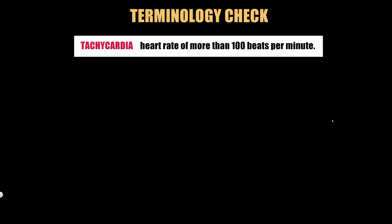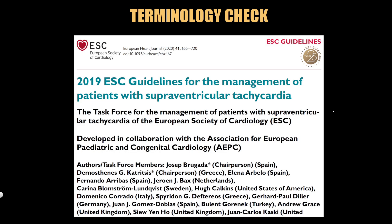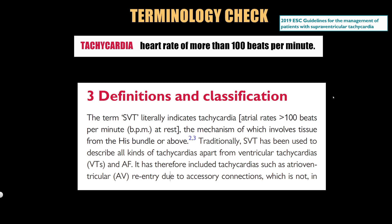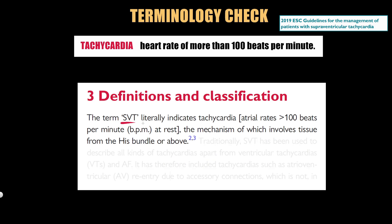Let's start from the terminology check. Tachycardia means a heart rate greater than 100 beats per minute. According to European Cardiology Society guidelines for the management of patients with supraventricular tachycardia, the term supraventricular tachycardia, or SVT, literally indicates tachycardia with atrial rates more than 100 beats per minute at rest, the mechanism of which involves tissue from the His bundle or above.